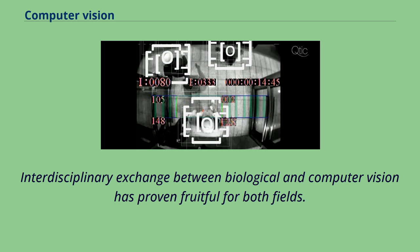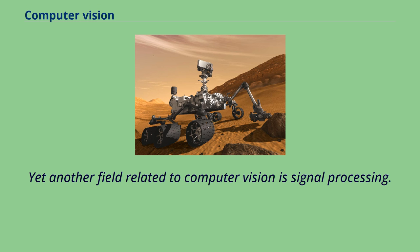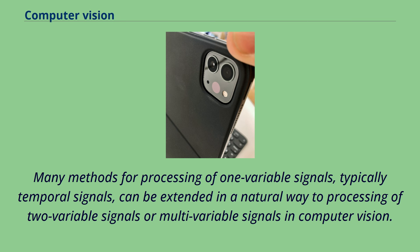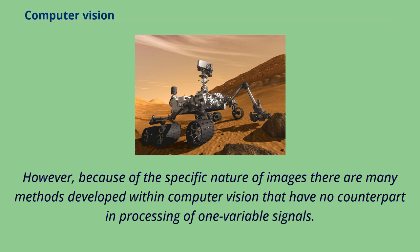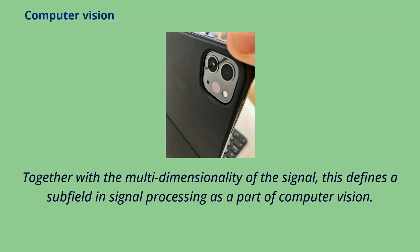Yet another field related to computer vision is signal processing. Many methods for processing of one-variable signals, typically temporal signals, can be extended in a natural way to processing of two-variable signals or multivariable signals in computer vision. However, because of the specific nature of images, there are many methods developed within computer vision that have no counterpart in processing of one-variable signals. Together with the multidimensionality of the signal, this defines a subfield in signal processing as a part of computer vision.